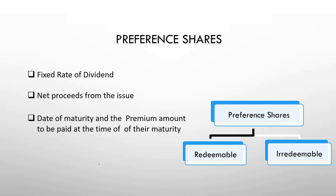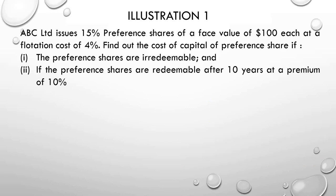Let's go with the first illustration. ABC Limited issues 15% preference shares of face value $100 each at a floating cost of 4%. You have to find the cost of capital of preference shares in two cases: first, if the preference shares are irredeemable; and second, if the preference shares are redeemable after 10 years at a premium of 10%. We'll start with the irredeemable case.